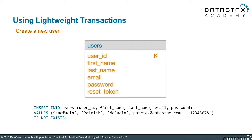We'll show two different lightweight transactions — one using an insert statement and the other using an update. The first is an insert statement where we are trying to create a new user in our users table. In the table diagram you can see that the primary key is the user_id column. Our actual insert statement is adding this new user with the user ID 'pmcfathen' and includes first name, last name, and so forth. Note the keywords IF NOT EXISTS, which makes this a lightweight transaction instead of a normal insert. This allows us to make sure there isn't already a 'pmcfathen' user in our table, and avoids accidentally overwriting that user's data.